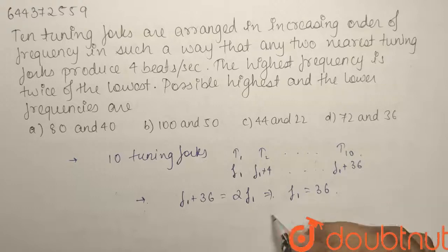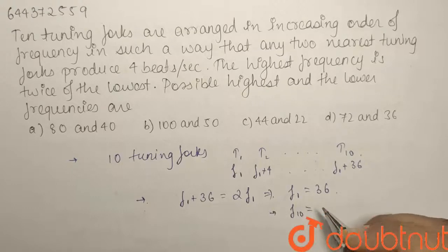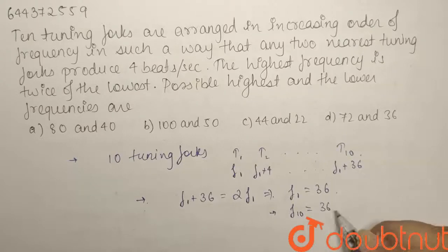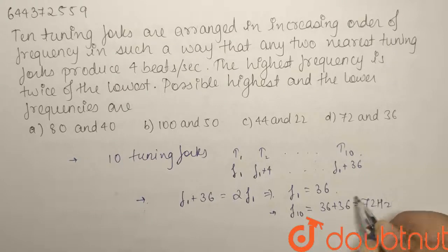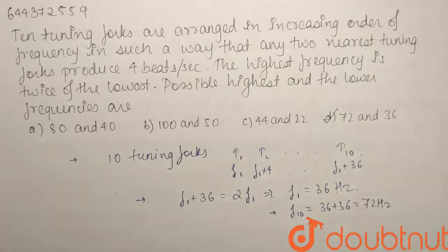So our lowest frequency is 36, and our highest frequency, that is F10, will be equals to 36 plus 36, that is 72 hertz. So having a look at the options, our option D, 72 and 36, is the right answer. Thank you.